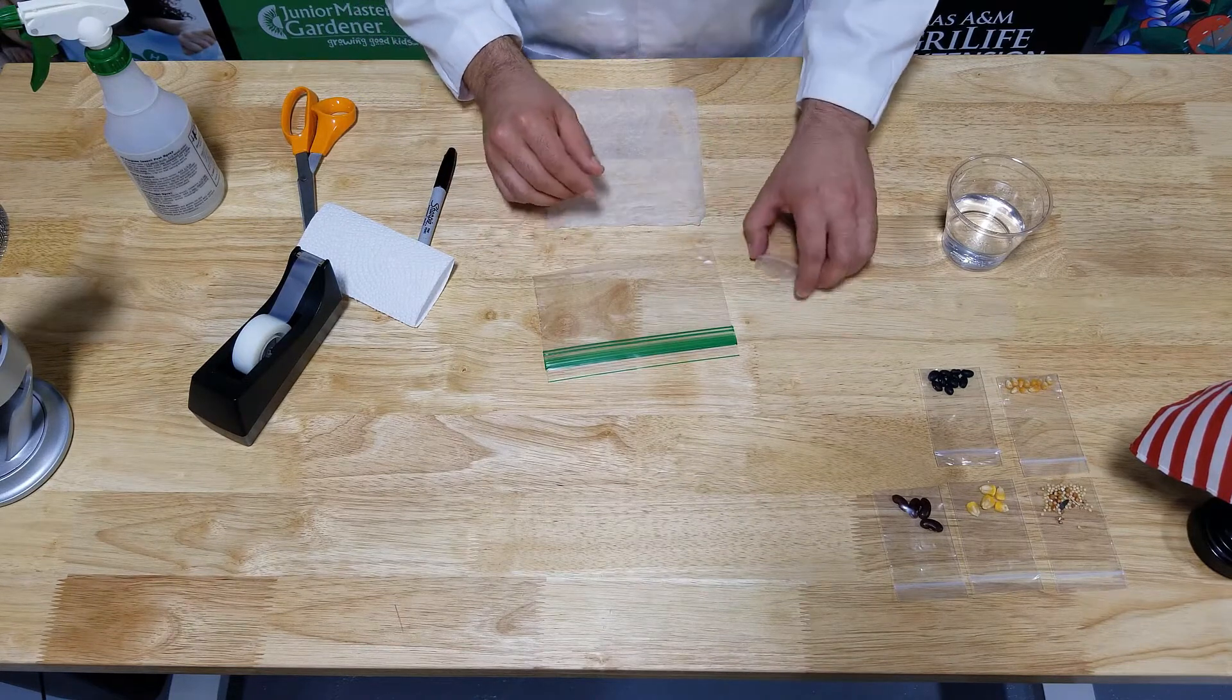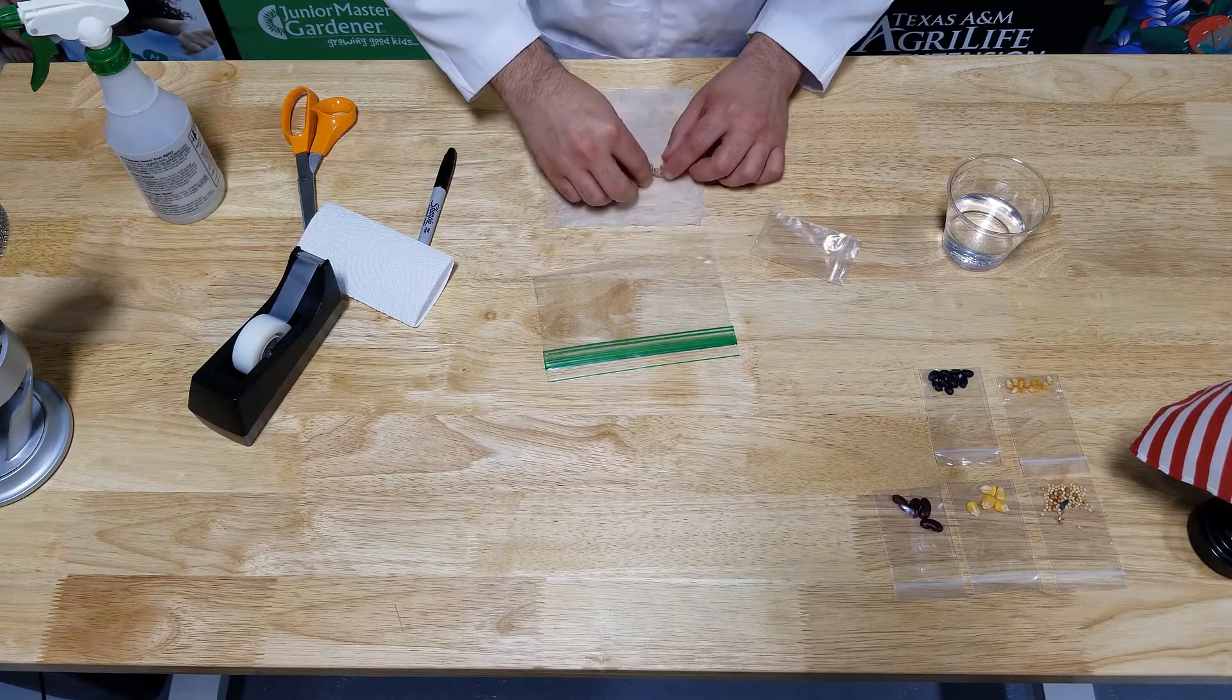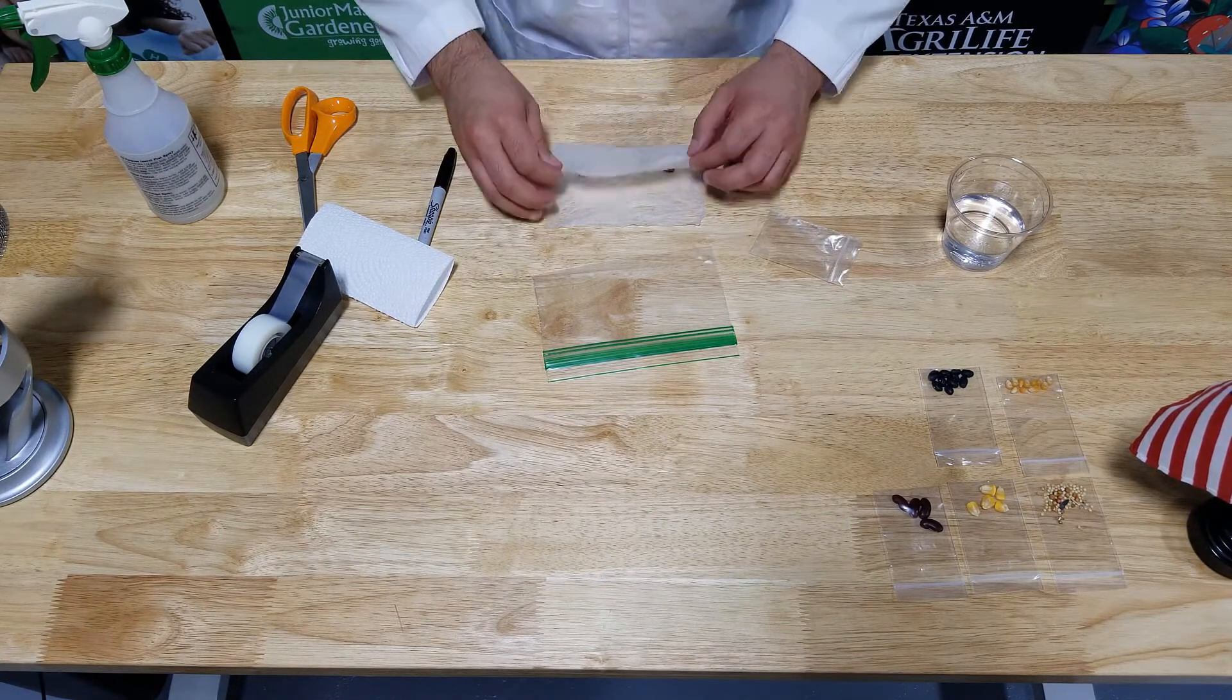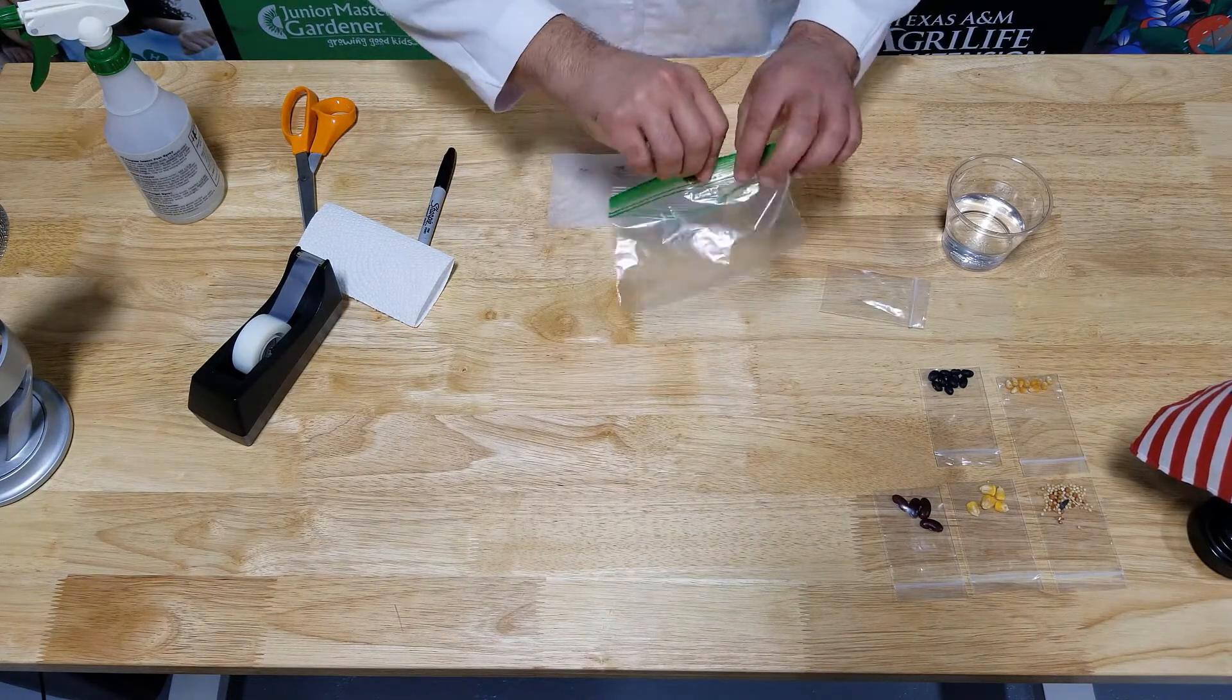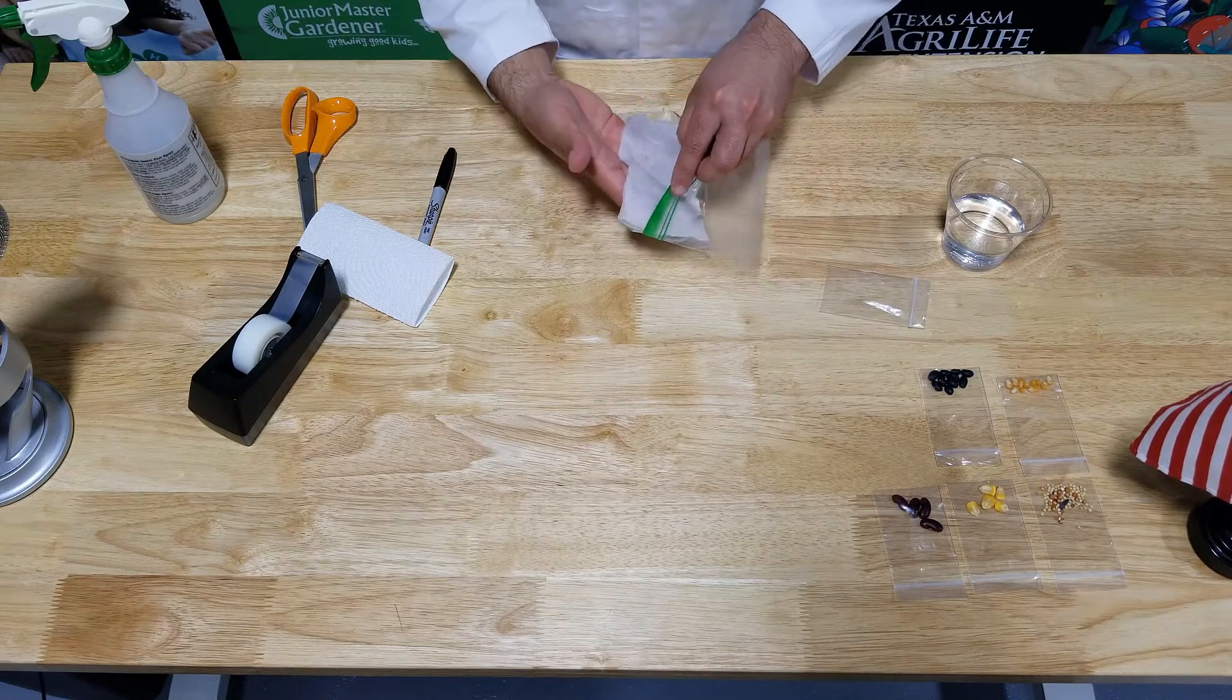I'm going to take the seeds that we found. We're using pinto beans here. I'm going to lay them in my paper towel. I'm going to fold my paper towel over. Now I'm going to take my baggie, open it up, and we're going to insert that paper towel with our seeds, where it lays flat inside our bag.